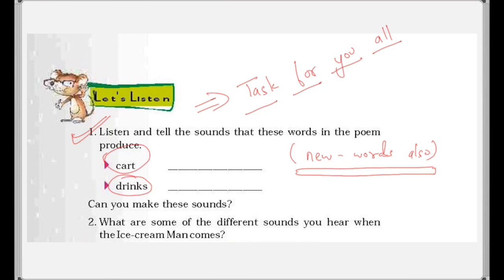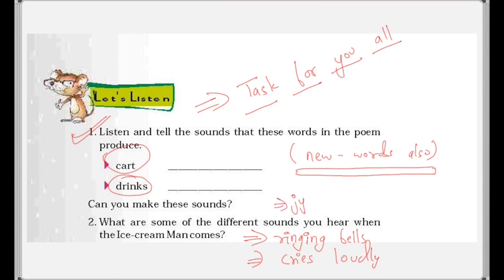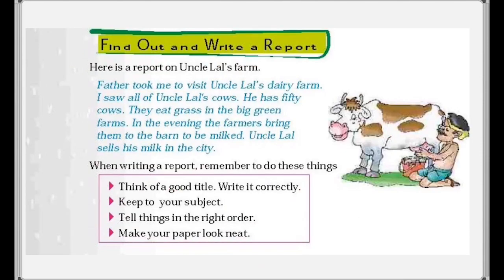What are the different sounds you hear when the ice cream man comes? We hear the sound of a ringing bell — usually when he comes he rings a bell as a signal that he has arrived. Then he cries out loudly — he shouts to sell his ice creams. And then we also hear the joyful shouting of the children. These are some common sounds heard when the ice cream man comes.